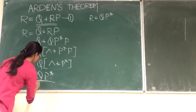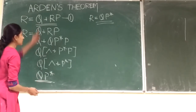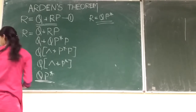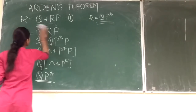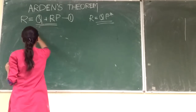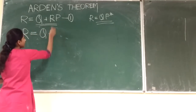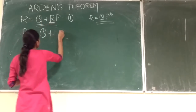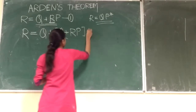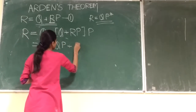So here we get QP*, which was to be found. We have now proved that QP* is a solution for this equation, but we now need to prove that this is the only unique solution. So what we will do is, in place of R, we will put Q + RP again. So it will be Q + (Q + RP) into P, which gives Q + QP + RP².